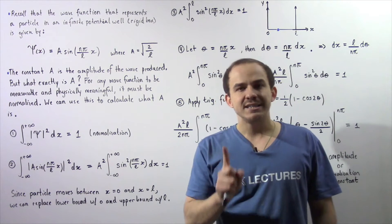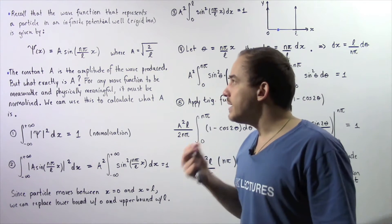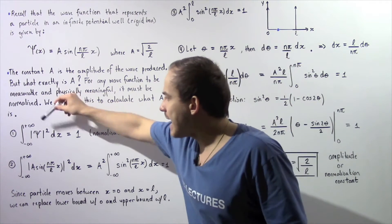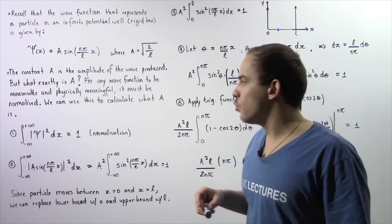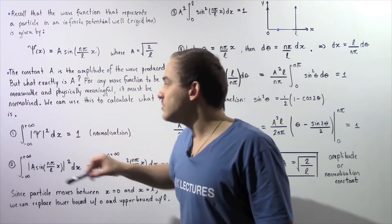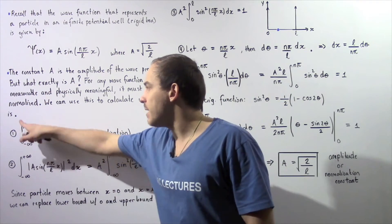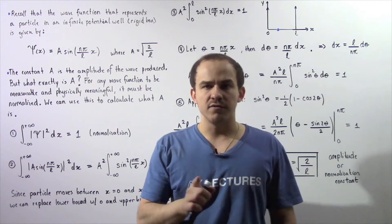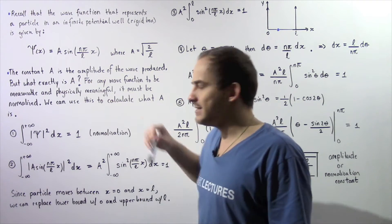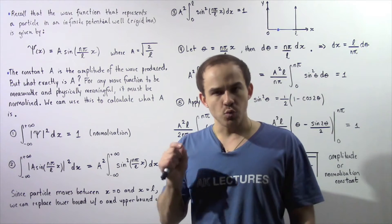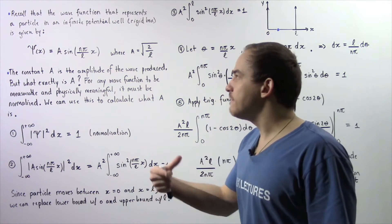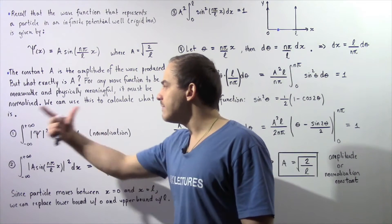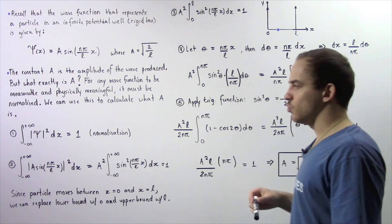Recall that by definition, what it means for a wave function to be normalized is that it has to satisfy this equation: the integral from negative to positive infinity of the square of the absolute value of the wave function with respect to dx is equal to 1. For our wave function to be normalized, this has to be true — the left side has to equal 1.